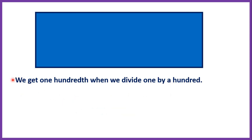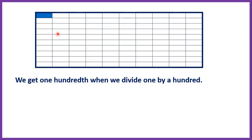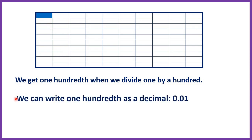We get one hundredth when we divide one by a hundred. Again we've got one big rectangle and if we divide that into a hundred pieces and keep only one piece then we have one hundredth. We can write one hundredth as a decimal as well — that's 0.01.